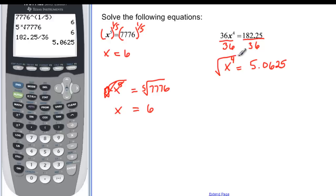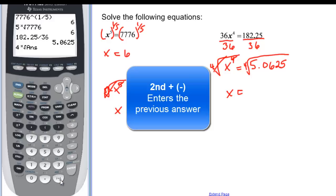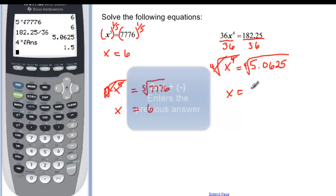But that's okay because I can just take either the fourth root, or I can take to the one-fourth, depending on which one's more comfortable for you. The fourth root of x to the fourth is going to be x. The root is 4. Math, option 5. And since I already have 5.0625 here in my calculator, I could just say second. And then the negative down here in the blue says answer. So it's automatically going to put my 5.0625 in there for me. And I find out that it's 1.5.